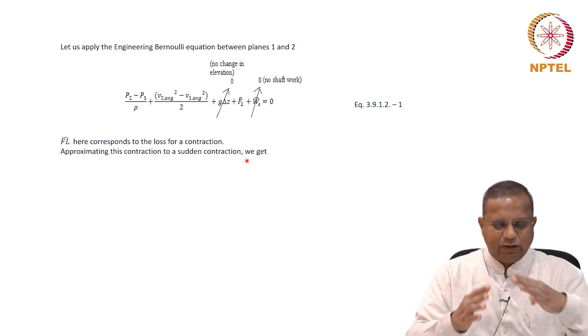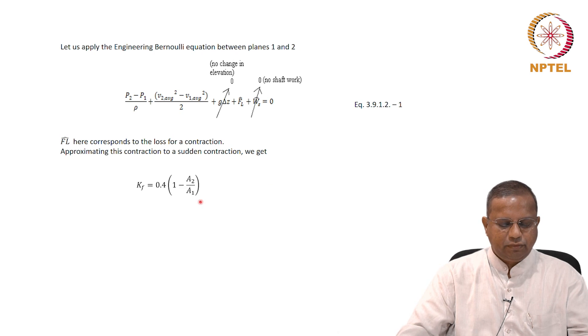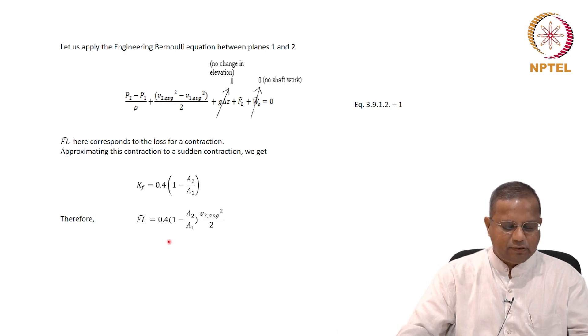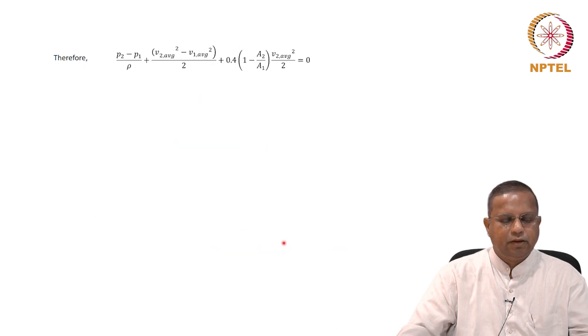Approximating this loss to a sudden contraction, it could be gradual and we are getting an estimate by using a sudden contraction. We will get the loss factor kf to be 0.4 into 1 minus a2 by a1. This we have already seen. Therefore, the friction loss per unit mass is 0.4 times kf into v average squared by 2, which is 0.4 into 1 minus a2 by a1, v2 average squared by 2. You know that the velocity is taken at 2.